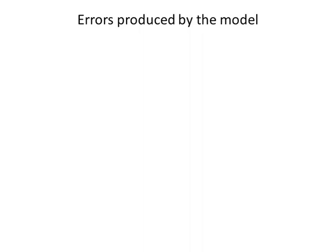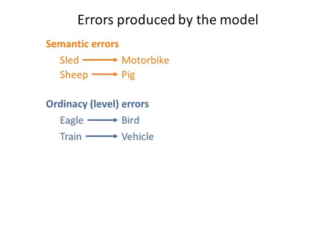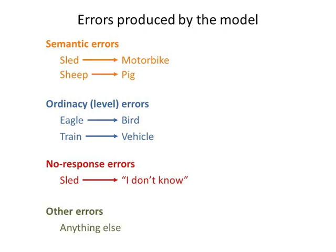In summary, when we damage the model, we see the same kinds of errors that we see in patients with semantic dementia. Semantic errors, where the incorrect name of a related kind of object is produced. Ordinacy or level errors, where the model is capable of producing a more general response that is technically correct but not at the same level of specificity it usually produces. And, especially with increasing brain damage, no-response errors — an inability to activate any name at all. Other errors, such as producing completely unrelated responses to a given input, are rarely or even never observed in the model.